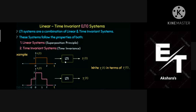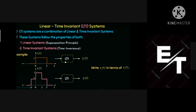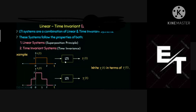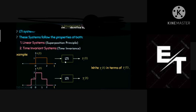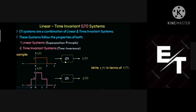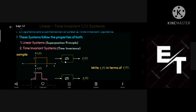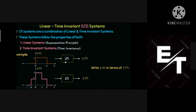Today our topic is linear time invariant systems. In control systems, we have three mathematical models: the first is differential equations, the second is Laplace transform — which is most important — and the third is state space models. In the first, second, and third chapters, we mainly use differentiations and Laplace transforms.